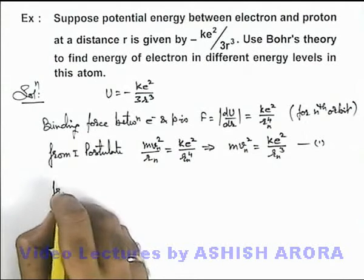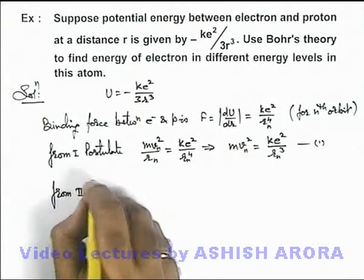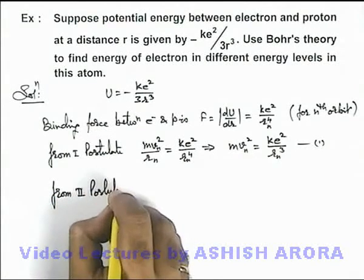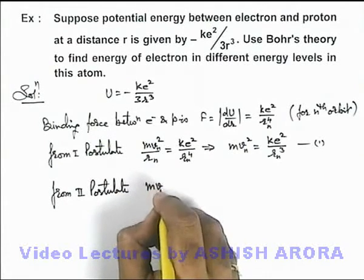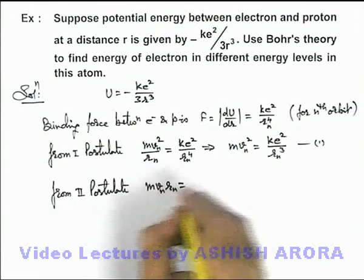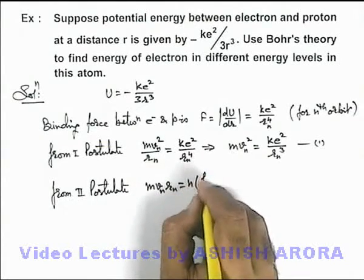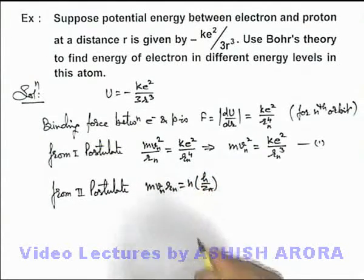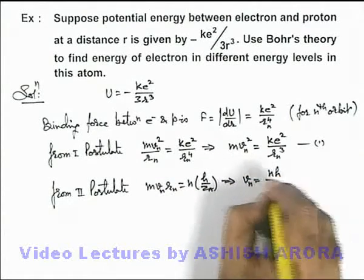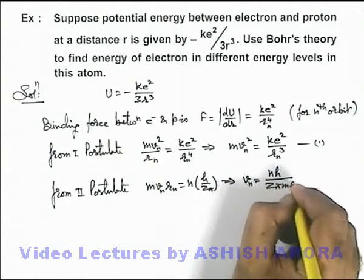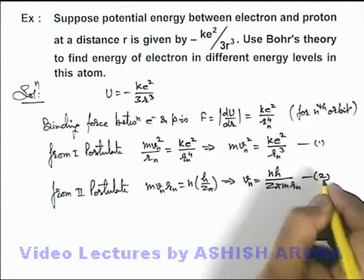From second postulate of Bohr model, we know that angular momentum of revolving electron is quantized, which is m v r n equals n times h over 2 pi. From this relation we get v n as n h over 2 pi m r n. This is our equation number 2.